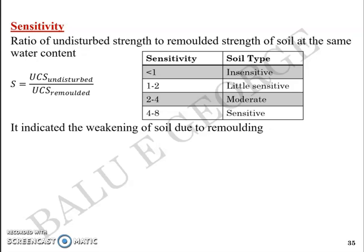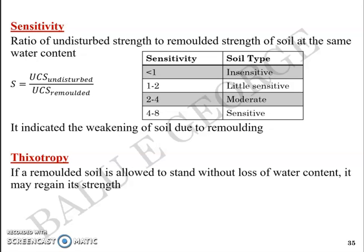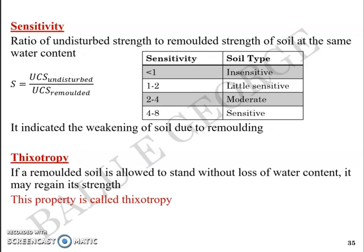Another term is thixotropy. Thixotropy is a property. If this remolded soil is allowed to stand without loss of water content, it may regain its strength. This property is what we call thixotropy. For example, the clay after remolding is allowed to stand on its own without disturbance and without the loss of water content, it may gain back its strength.